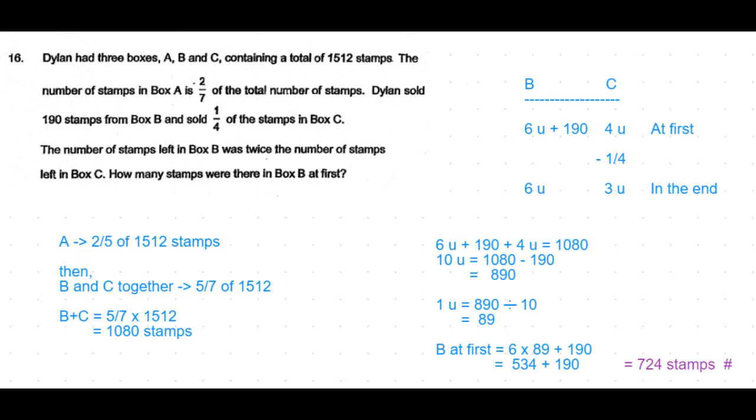Which means 10 units + 190 = 1080 stamps. 10 units = 1080 - 190 = 890. So 1 unit = 890 ÷ 10 = 89.